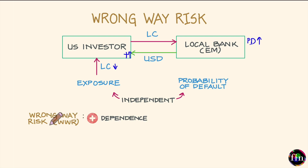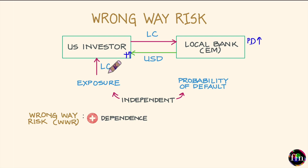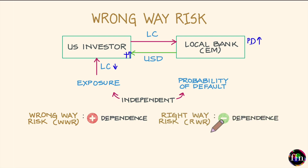When there is a positive dependence between exposure and probability of default, that situation is called a wrong way risk situation. Equivalently, wrong way risk exists when there is a negative dependence between exposure and credit health — meaning whenever exposure goes up, credit health goes down. Conversely, if there is a negative dependence between exposure and probability of default, that situation is called a right way risk situation.